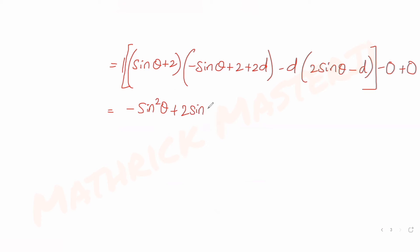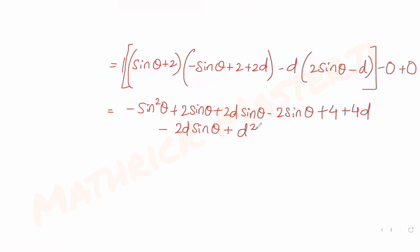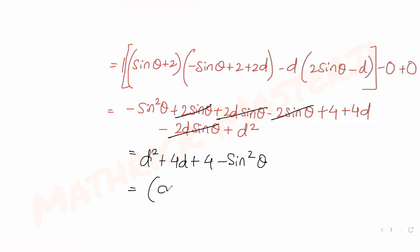Expanding fully: -sin²θ + 2sinθ + 2D·sinθ - 2sinθ - 4 + 4D - 2D·sinθ + D². The 2sinθ and -2sinθ cancel; 2D·sinθ and -2D·sinθ cancel. We're left with D² + 4D + 4 - sin²θ, which factors as (D+2)² - sin²θ.